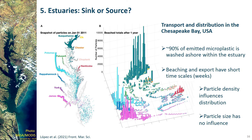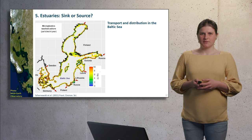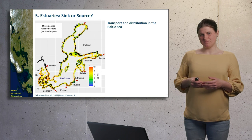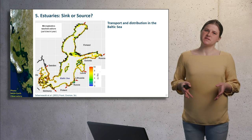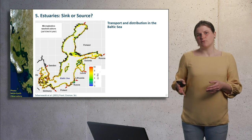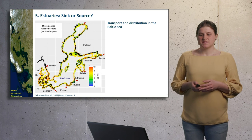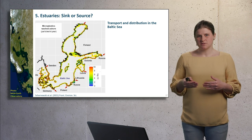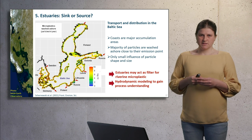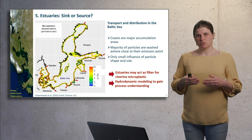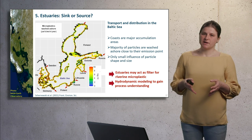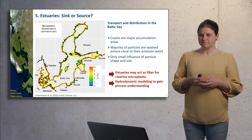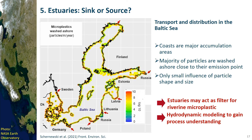Further simulations showed that particle size had no influence on distribution patterns. The results of the study are supported by another study in the Baltic Sea, a semi-enclosed sea in northeastern Europe, which can be seen as a large estuary being influenced by saltwater intrusion and freshwater discharges. In this study as well, microplastics were washed ashore shortly after emission, a few kilometers around their emission point, as indicated by the red arrows for the seven largest rivers in the Baltic Sea. Similarly, particle size had no influence on distribution, nor did particle shape.